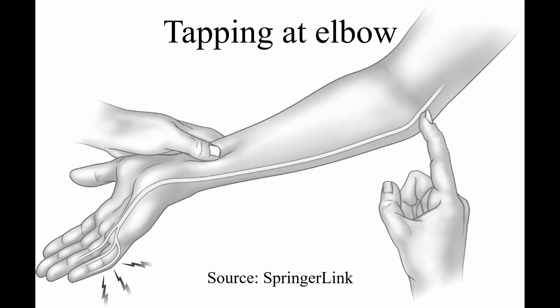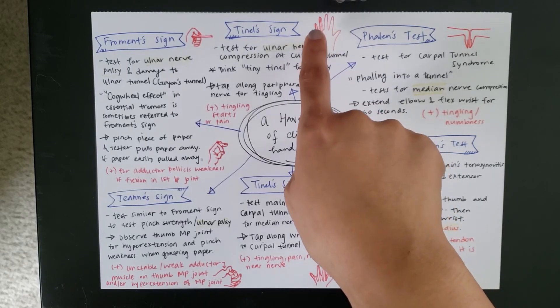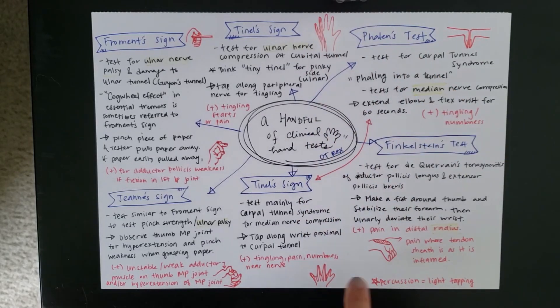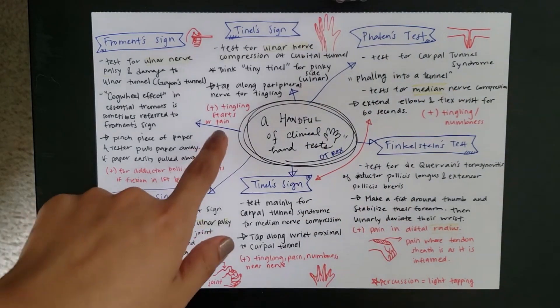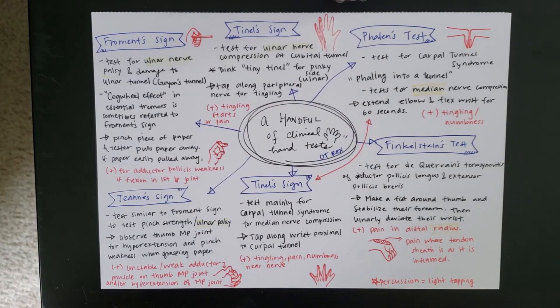And for this one, you tap along the peripheral nerve for tingling. And I drew a little hand here. And it innervates the pinky and the ulnar half of your ring finger, which is the opposite of the median. So, that also makes sense. So, if you have any tingling or it starts to feel painful on that peripheral nerve on the ulnar side, then that is a positive Tinel sign for ulnar nerve compression for cubital tunnel.